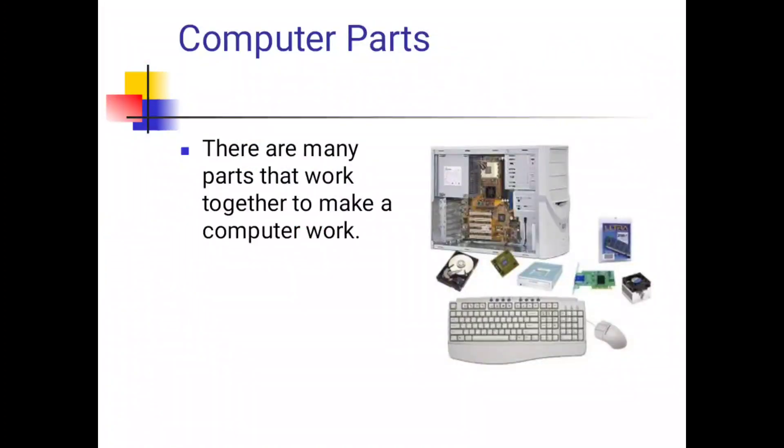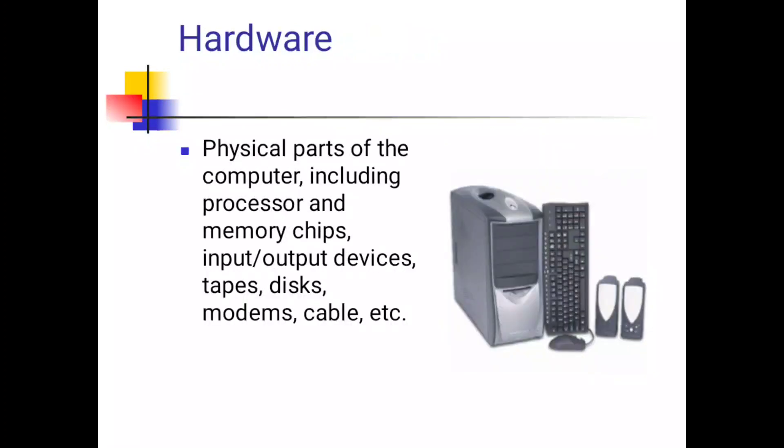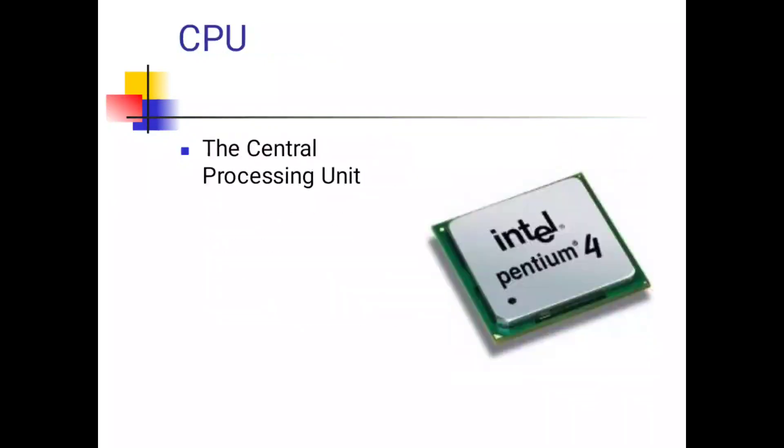Computer parts. There are many parts that work together to make a computer work. Hardware: physical parts of the computer including processor and memory chips, input output devices, tapes, disks, modules, cables, etc.